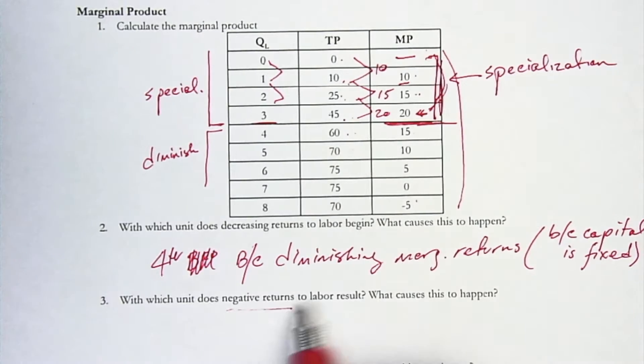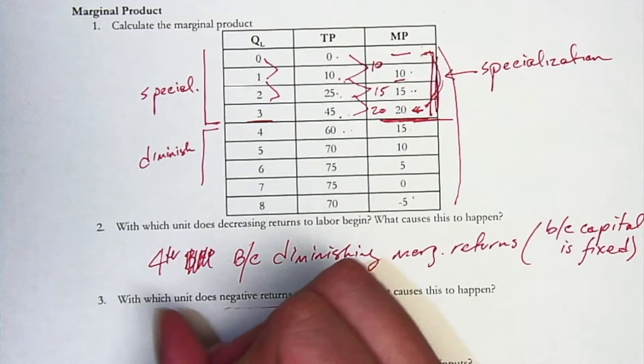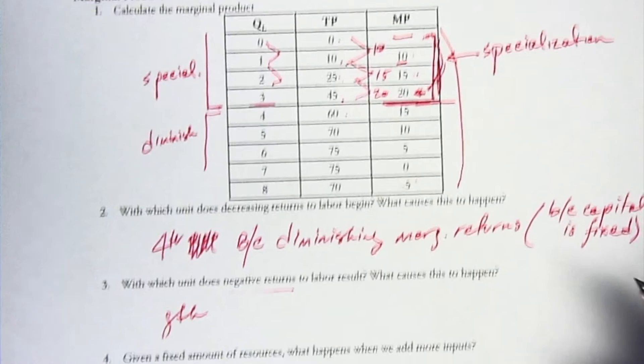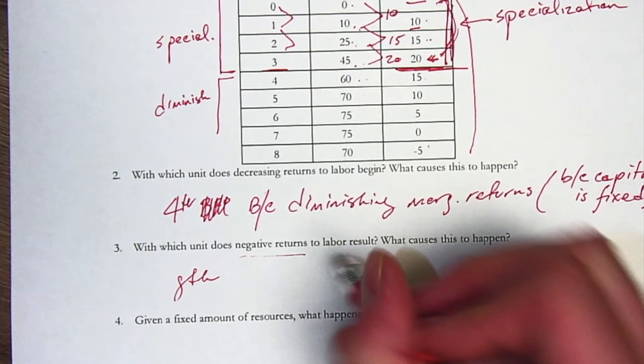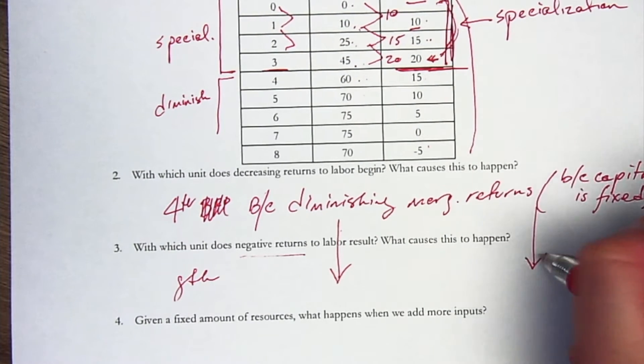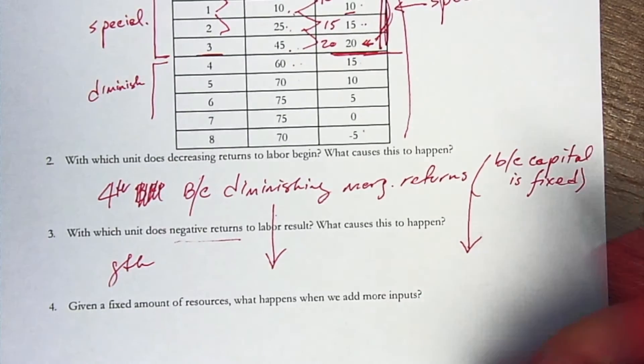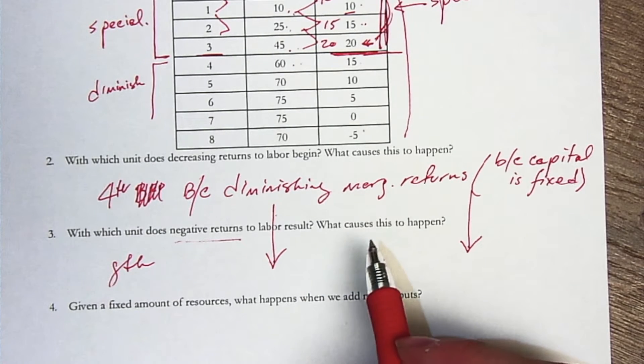With which unit does negative returns to labor result? That actually is the eighth unit. And we could actually say that that's, again, for the same reasons. That's the same reasons as before. It's because capital is fixed and there's diminishing marginal returns.